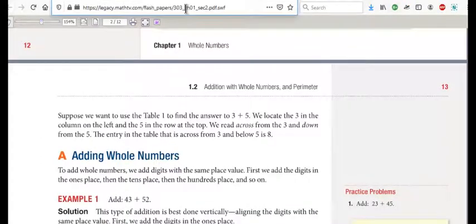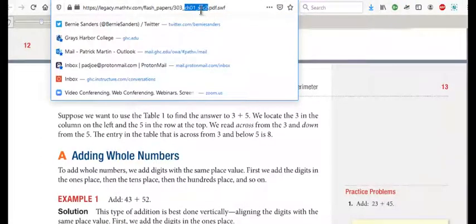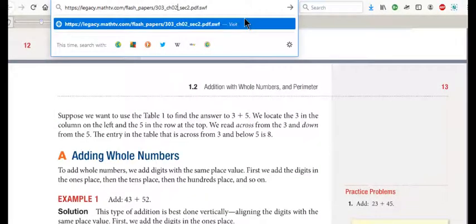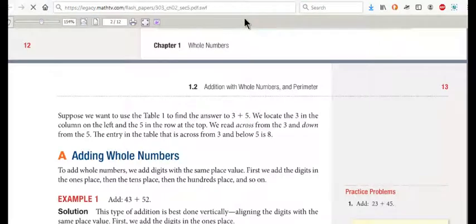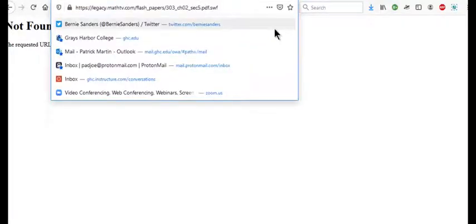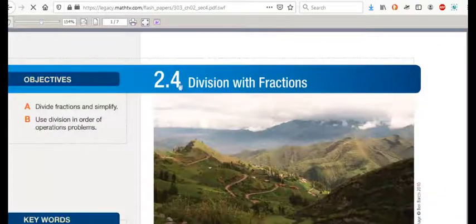You'll notice that there's chapter 01 section 2, so if I want to find chapter 2 section 5, I just do that and press enter, and it's not found because there is none. But there is a chapter 2 section 4, and if I press enter, there it is coming up now, 2.4.